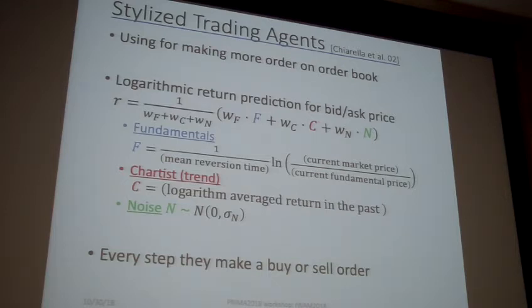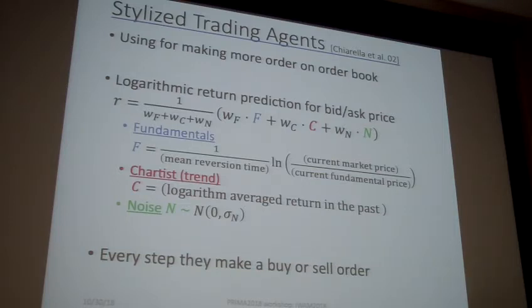Every agent calculates their reasonable price. The reasonable price is defined with this equation, and there are three factors. The first one is fundamental price. The second one is the charge, meaning some kind of trend. And the third one is noise. Using these equations, every agent calculates their reasonable price at every step and makes buy or sell orders.